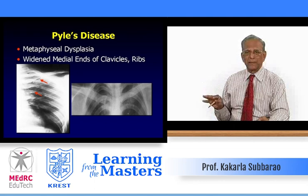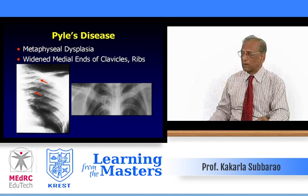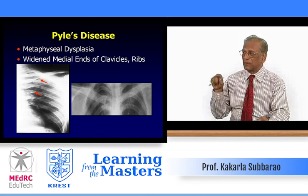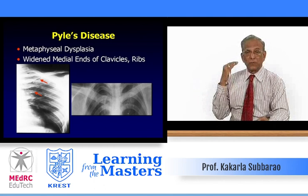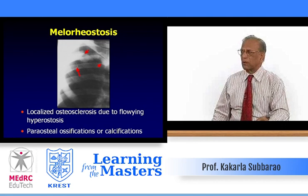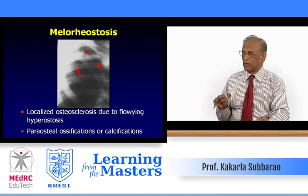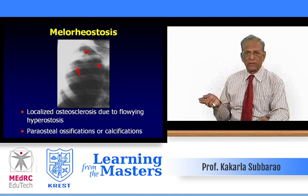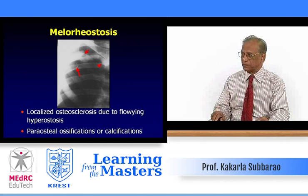Pyle's disease is rarely seen but must be considered. It is a metaphyseal dysplasia with lack of modeling of the tubular bones, particularly the metaphyseal part. Note the distended, dilated, extended posterior ends of the ribs, and wide medial ends of the clavicles and ribs — that is classical of Pyle's disease. Melorheostosis is not diffuse or generalized; it is a localized osteosclerosis due to a flowing type of hyperostosis, with possible para-osseous calcifications in the soft tissues.